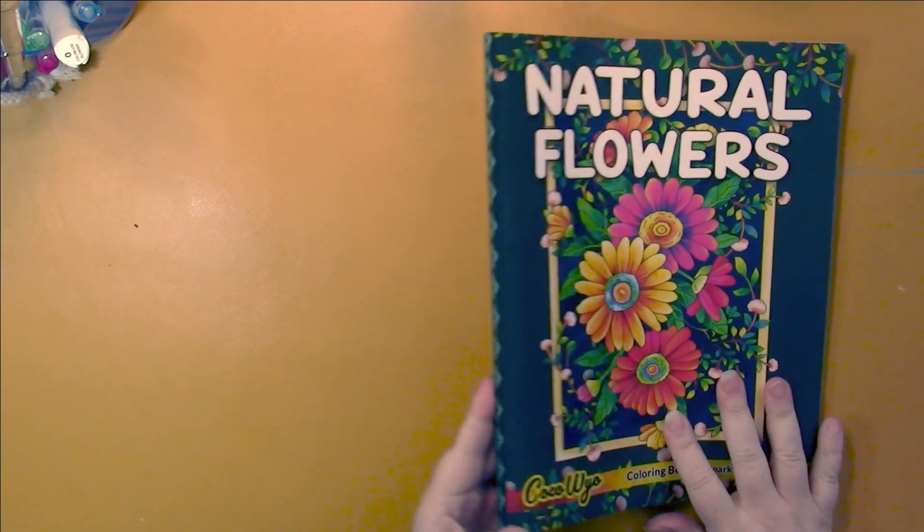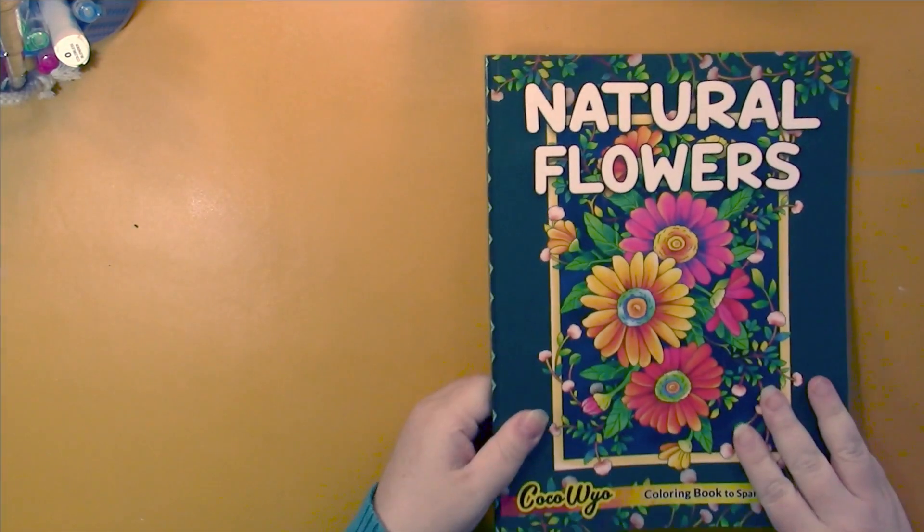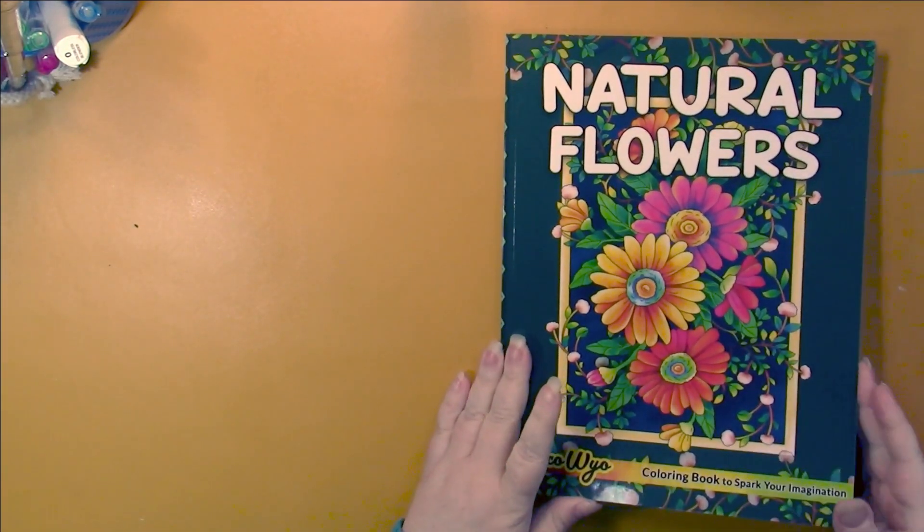We have glossy covers, no information on the spine, and the back shows us six sample pages. This is an Amazon printed book with Amazon paper.